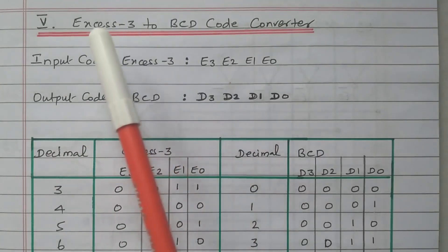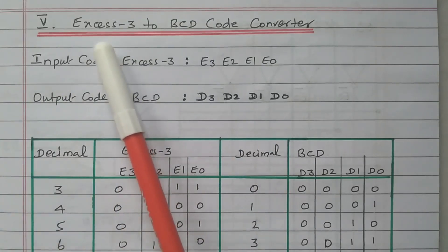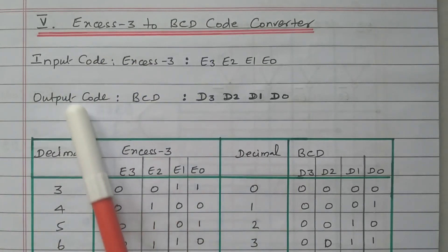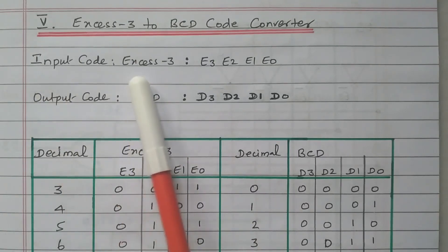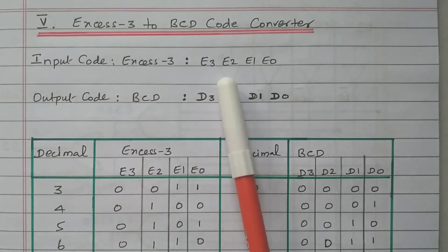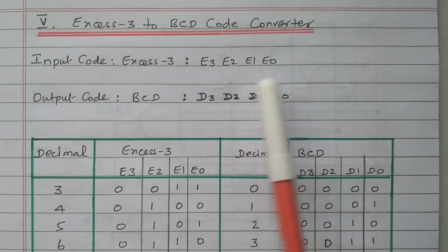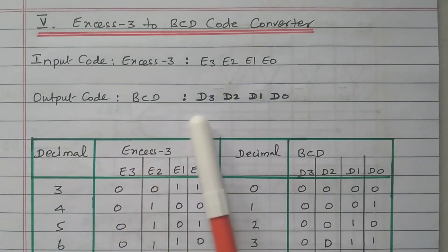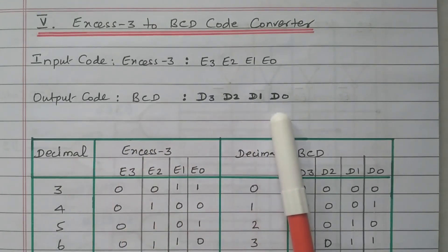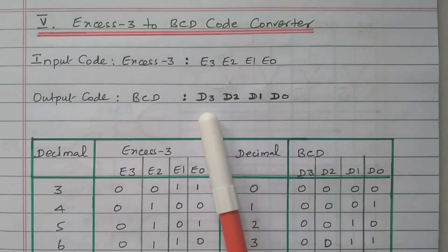BCD to XS3 is available in a separate video. Here we focus on XS3 to BCD. We will assign the input code: the XS3 code is assigned as E3, E2, E1, and E0, where E0 is the LSB and E3 is the MSB. The output code is BCD, represented as D3, D2, D1, and D0, where D0 is the LSB and D3 is the MSB.